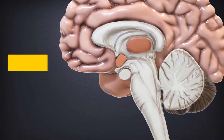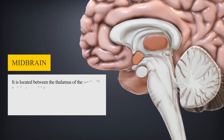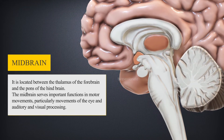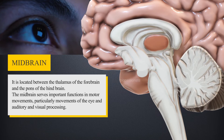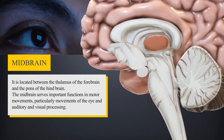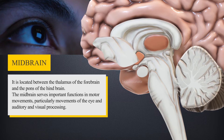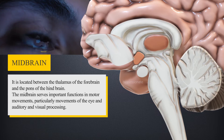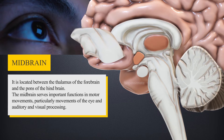The midbrain is located between the thalamus of the forebrain and the pons of the hindbrain. The midbrain serves important functions in motor movement, particularly movements of the eyes, and in auditory and visual processing.